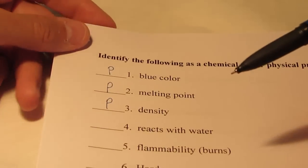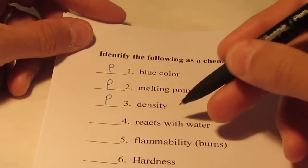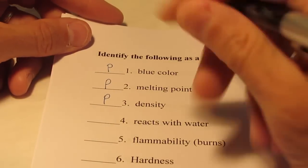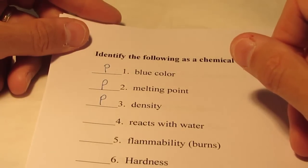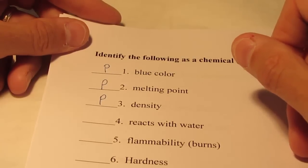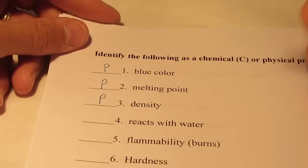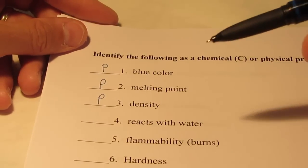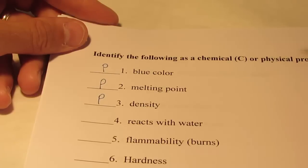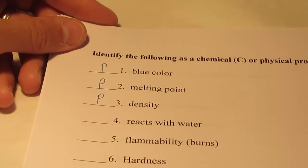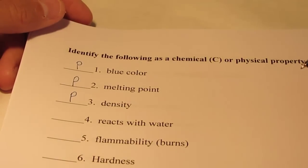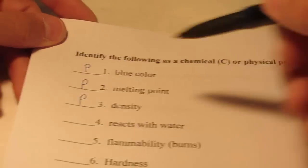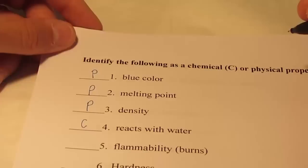So we have three physical properties to begin. Let's look at number four — something reacting with water. If I take a piece of sodium metal and put it in a beaker of water, it reacts violently. It gives off heat, it gives off hydrogen gas, and we end up making hydroxide and sodium ions. Determining that sodium reacts with water — have I changed its identity? I've made hydrogen gas, sodium ions, hydroxide ions. That is a chemical property of sodium.